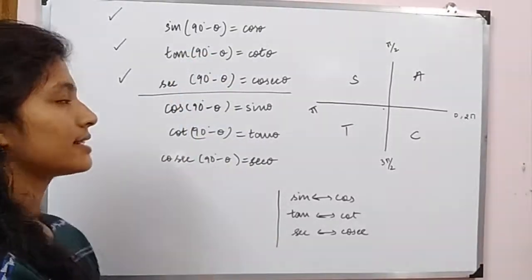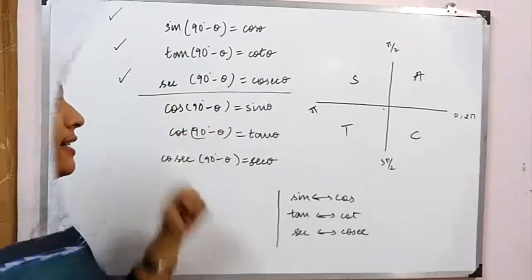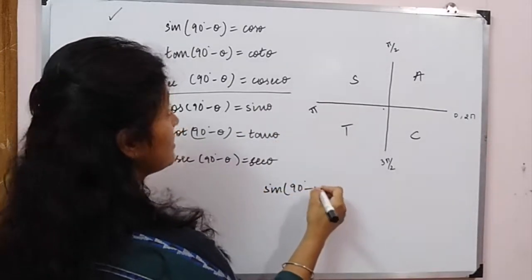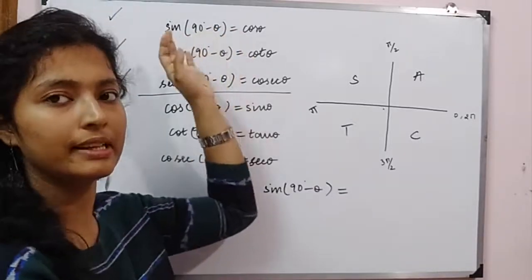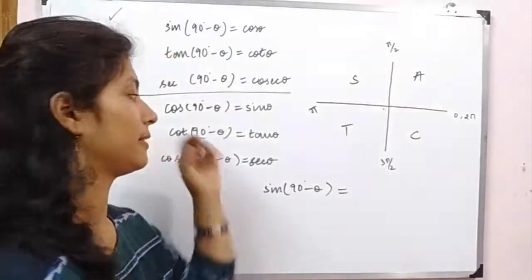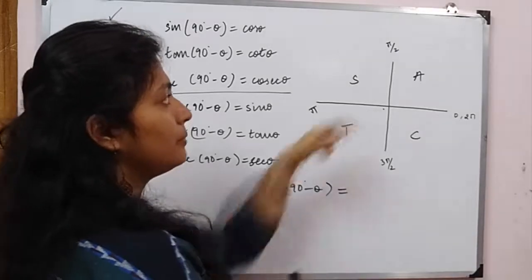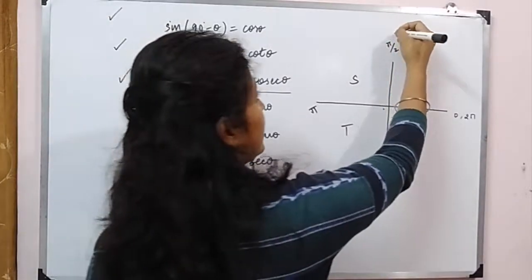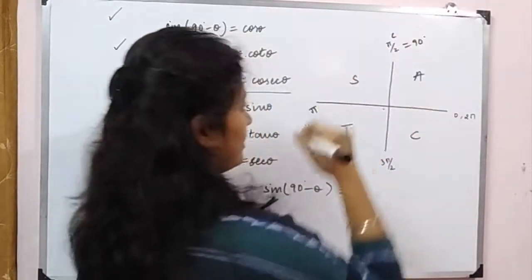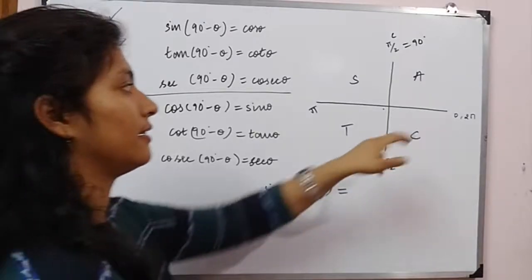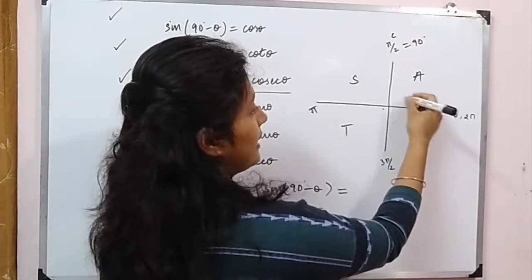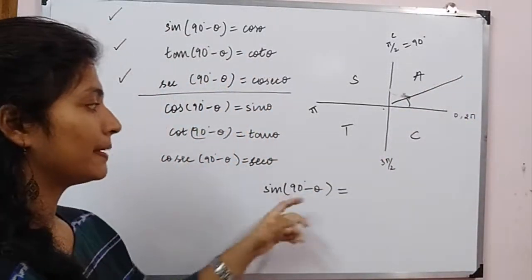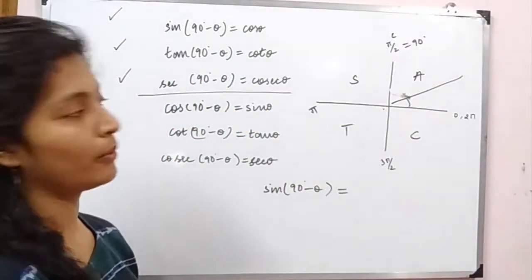Now let's look at this formula. First, we will see sin(90° − θ). What is sin(90° − θ)? It equals cos θ. We will try to verify it. Sin(90° − θ): 90 means pi/2 radians, which is 90 degrees. Go from 0 to 90 and subtract some angle — we lie in the first quadrant. In the first quadrant, everything is positive.